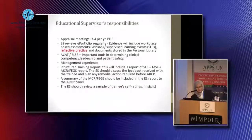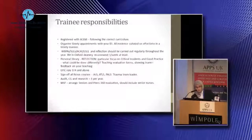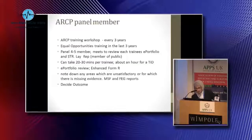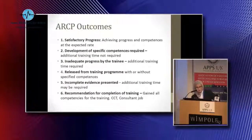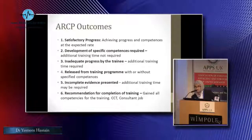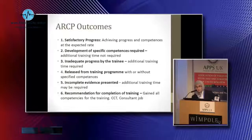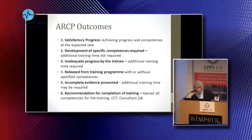For ARCP panel members, two things are required: they need to have completed equality and diversity training every three years, and should have attended an ARCP trainers workshop every three years. Regarding outcomes: outcome one is what every trainee wants. Outcomes two, three, and four are unsatisfactory outcomes. Outcome five means you might change to outcome one if the evidence is completed — it's documentary evidence on the e-portfolio that the panel looks at, and if it's not there, it's not done. Outcome six is when they complete training and become our colleagues.